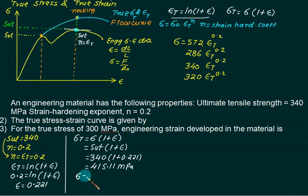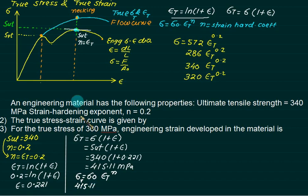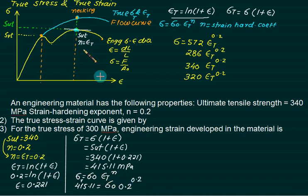We have σ = σ₀ · εₜⁿ. The value of sigma at SUT on the true curve is 415.11. We are on the flow curve, and we do not know sigma-0 yet. But epsilon-t and n are both known as 0.2. So: 415.11 = σ₀ × (0.2)^0.2. We can solve this to find sigma-0.